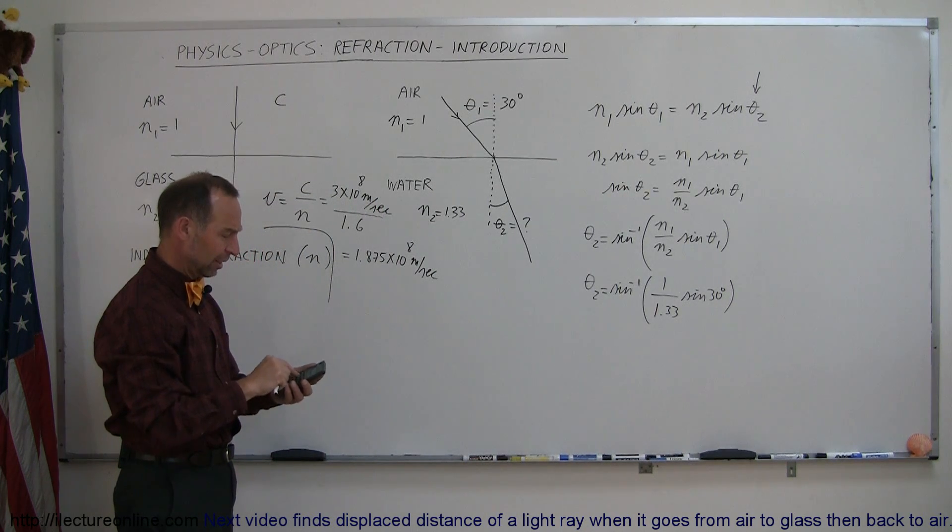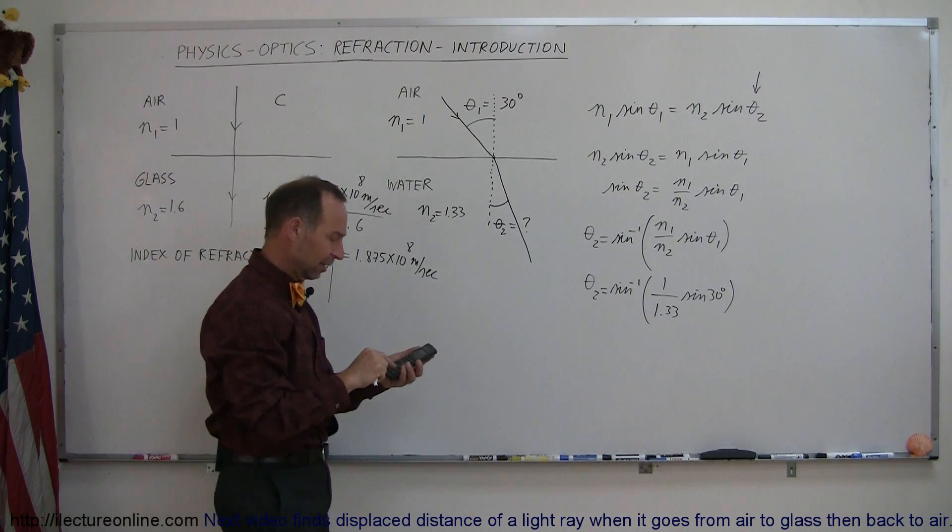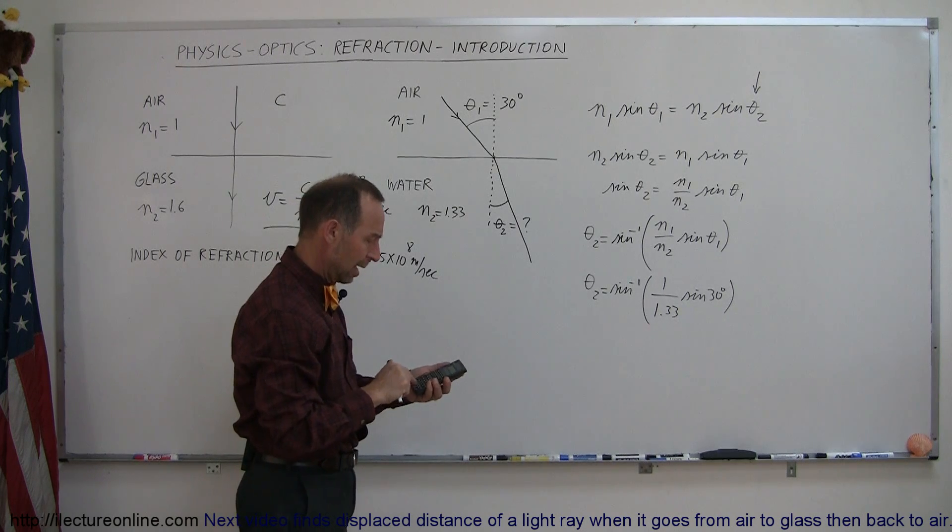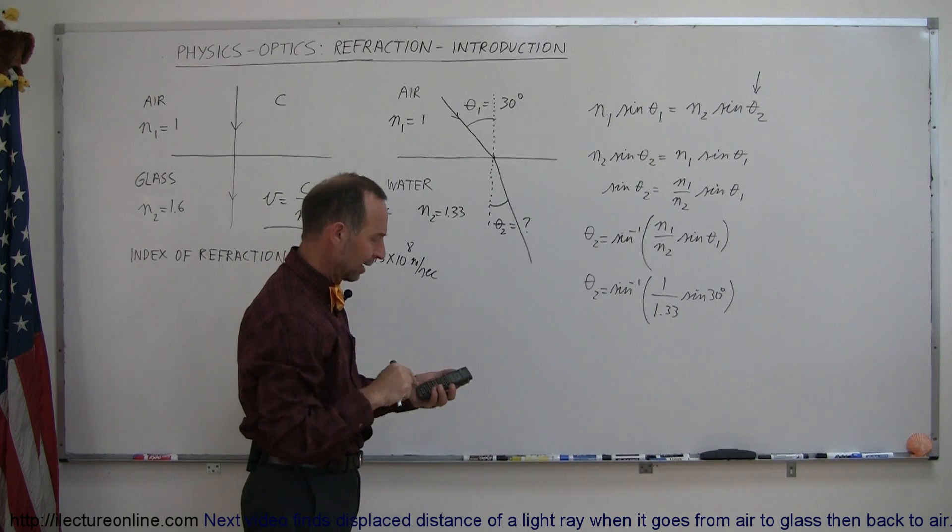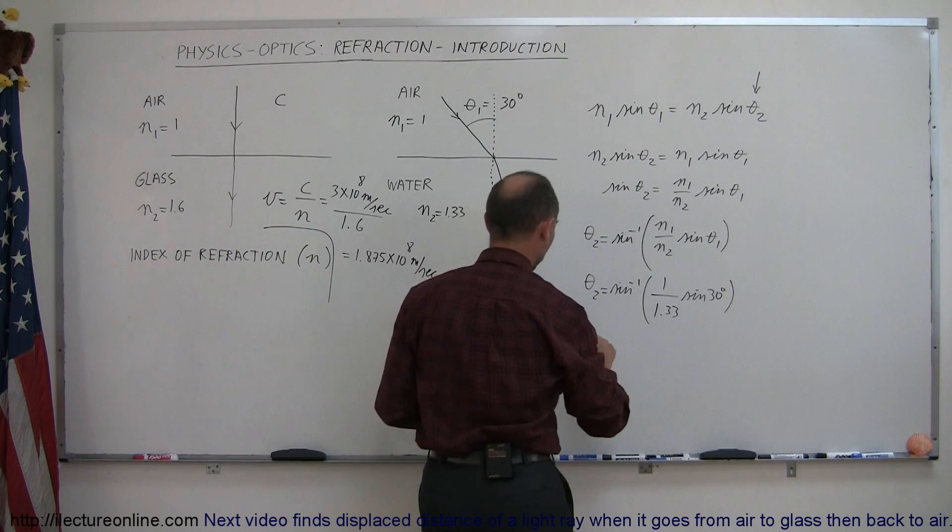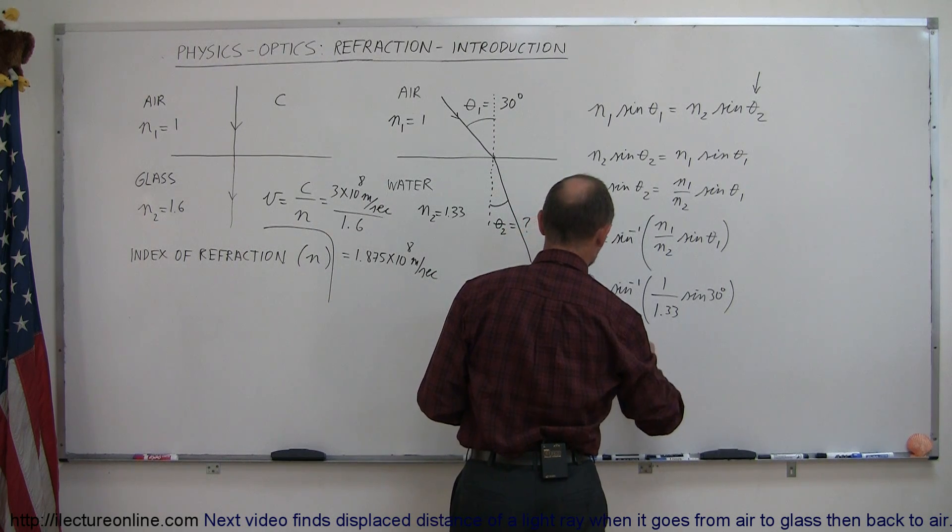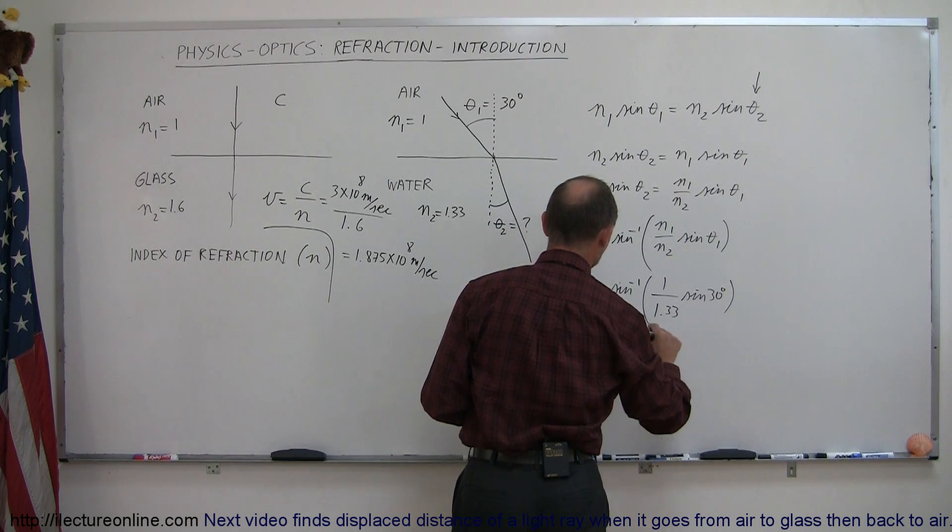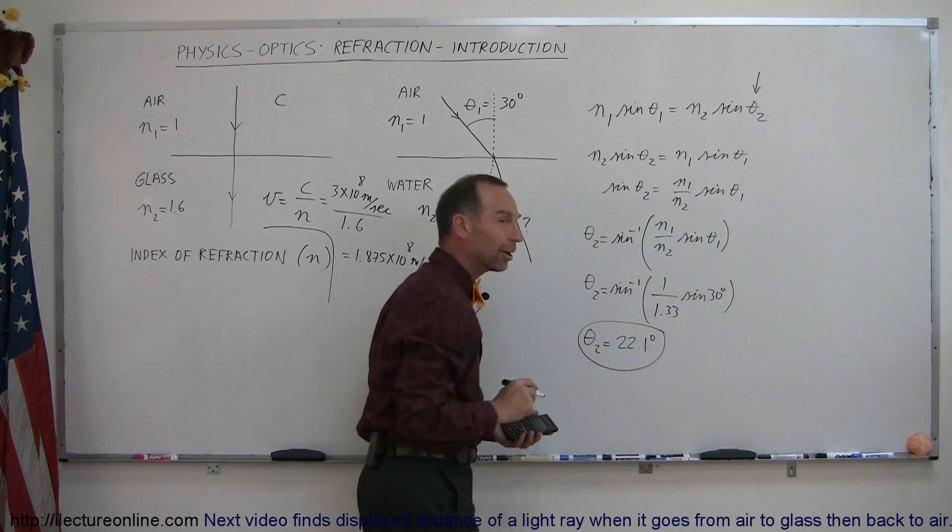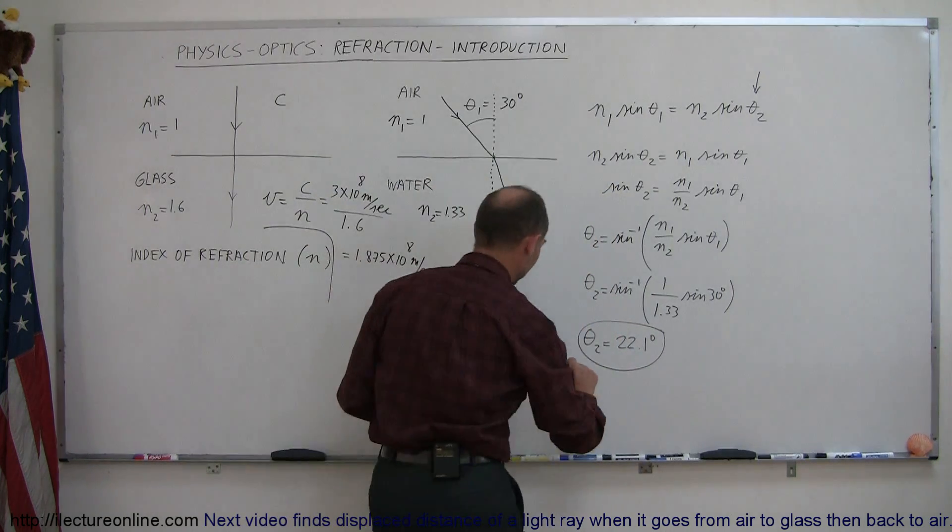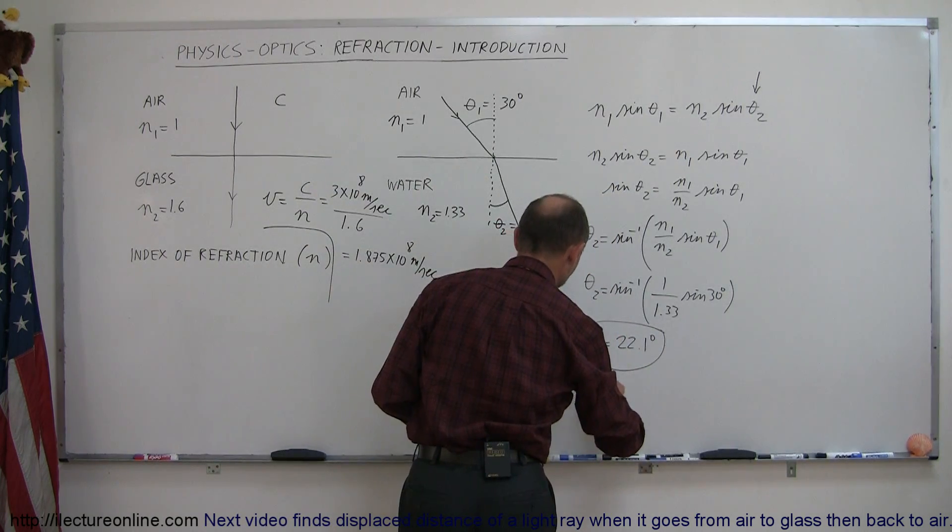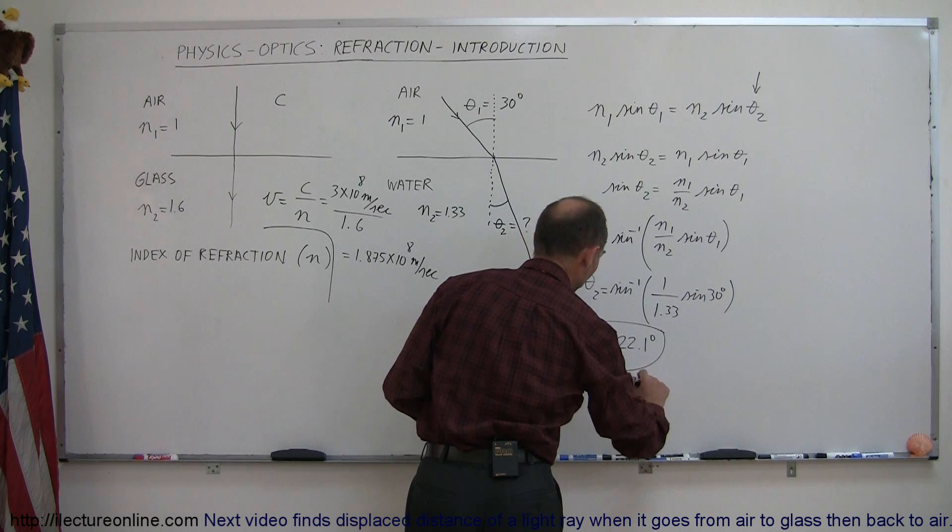Let's find out what it's equal to. I take the sine of 30, that should be 0.5, divide that by 1.33, and then take the arc sine of that, and we get 22.1 degrees. So theta sub 2 is equal to 22.1 degrees. That's what we call the angle of refraction.